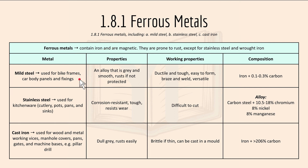The metals include mild steel, which is used for bike frames, car body panels and fixings. It's an alloy that is grey and smooth, and it rusts if it's not protected.